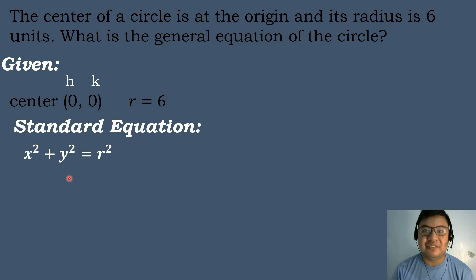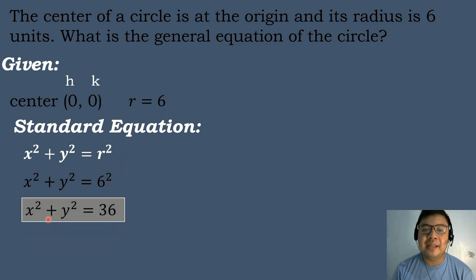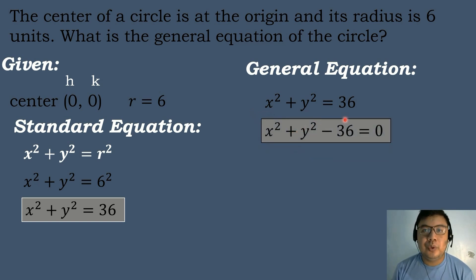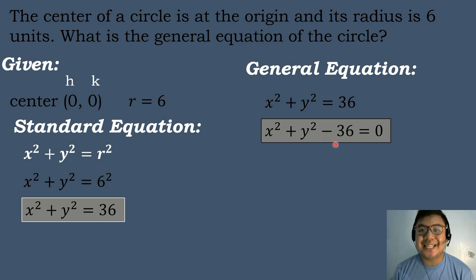We will substitute the corresponding values. Bring down x squared plus y squared equals the value of r; radius is equal to 6, raised to the second power. Simplify: x squared plus y squared equals 6 squared, or 6 times 6, which is equal to 36. To get the general equation, we will equate the equation to 0, meaning we will transpose positive 36 — it will become negative 36. So the general equation of the circle is x squared plus y squared minus 36 equals 0.